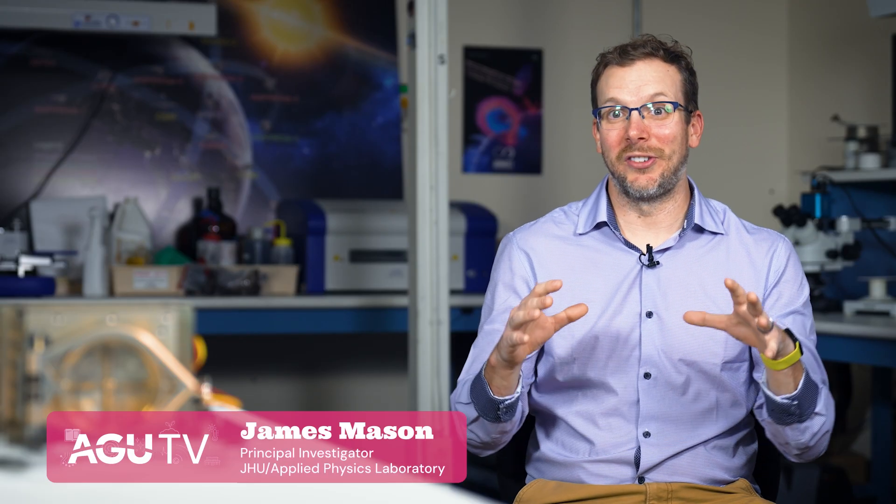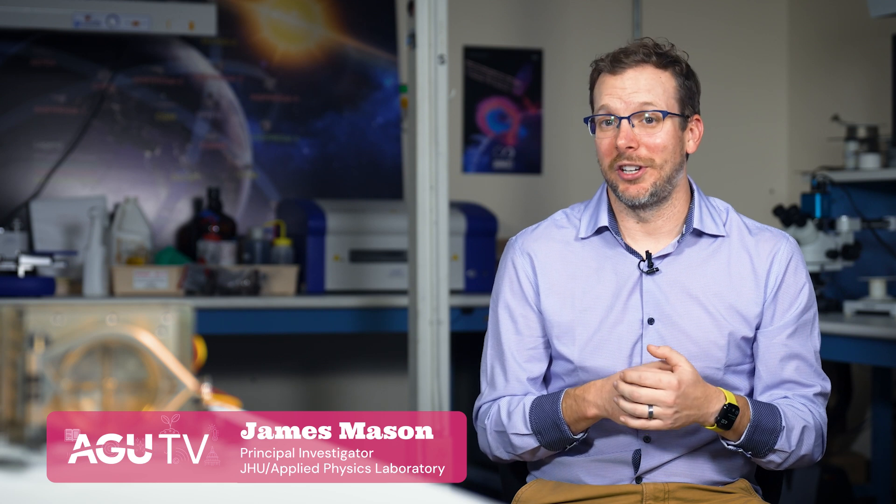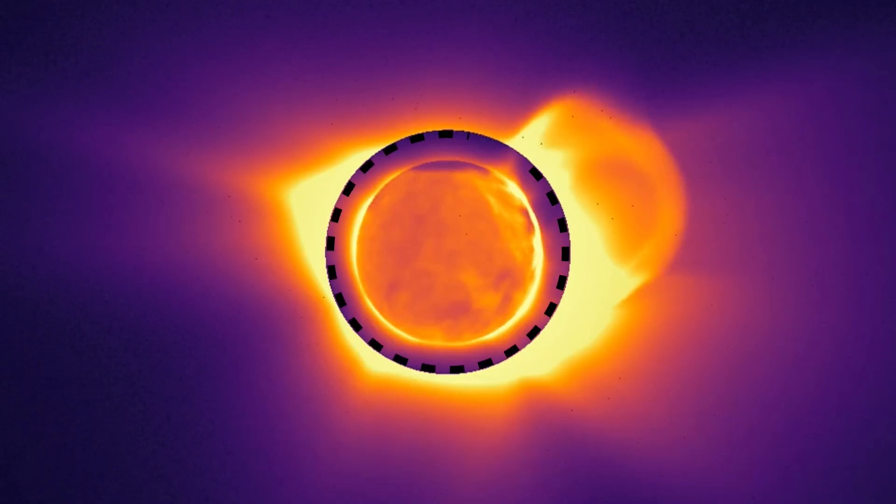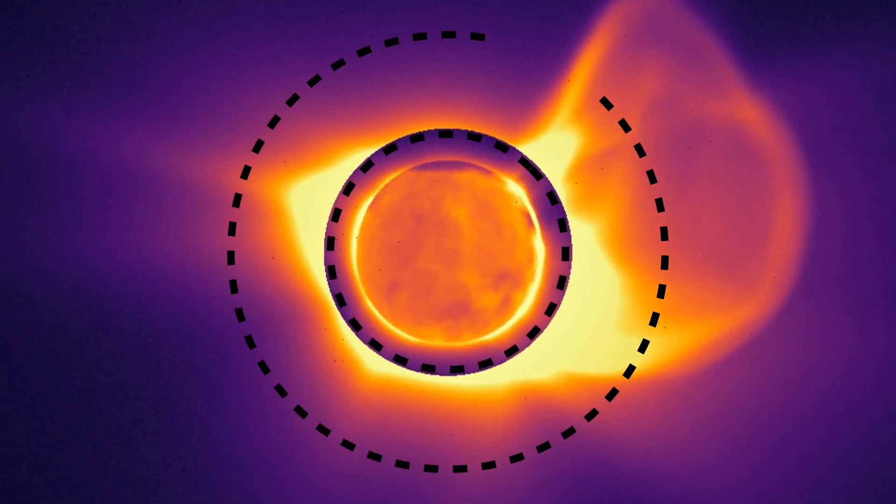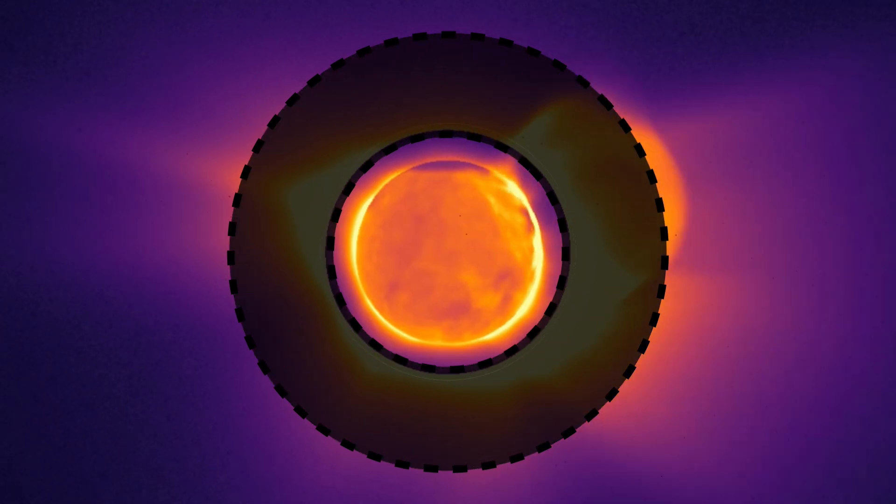Coronal mass ejections are these enormous explosions that occur on the sun frequently, several times a day on average. They're the most energetic phenomenon in the entire solar system. We've been limited in how well we could see them because the coronal mass ejections do almost all of their acceleration in this gap in between what we have traditionally been able to see.